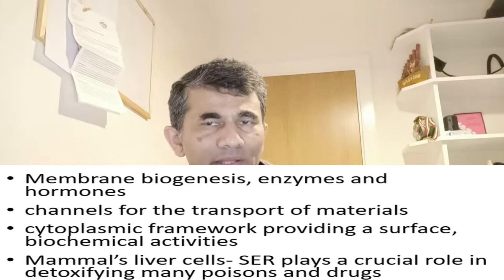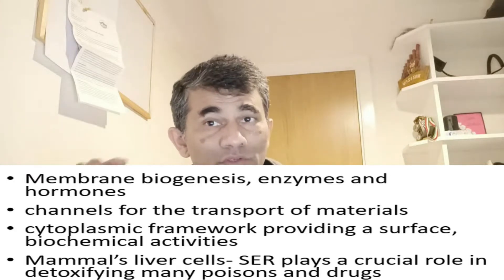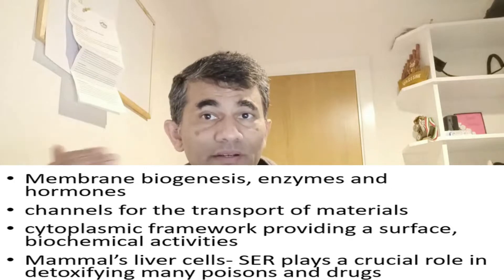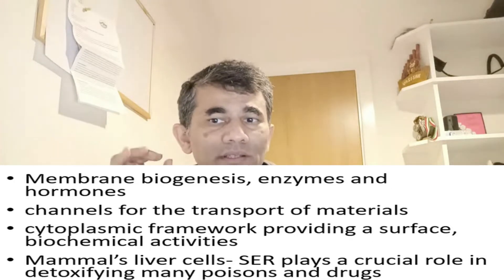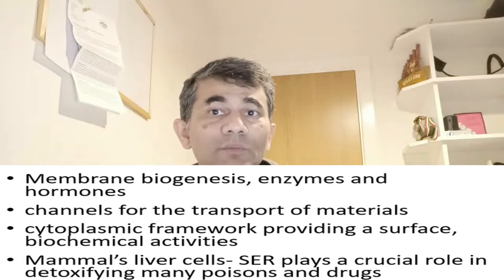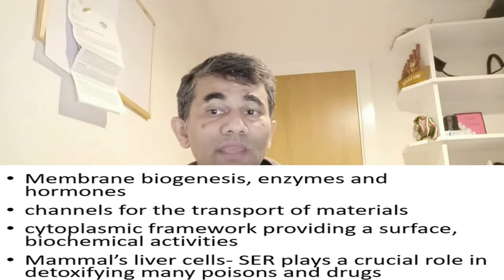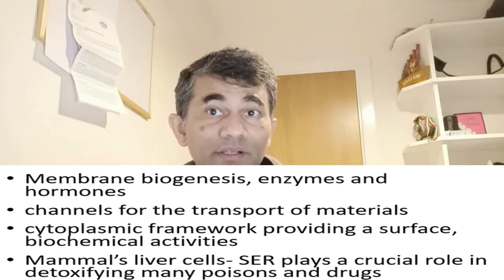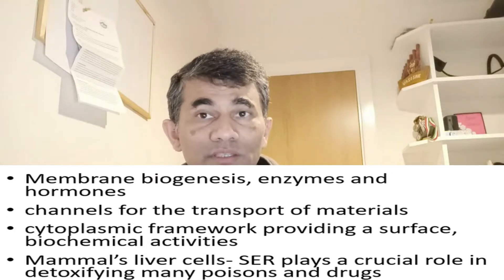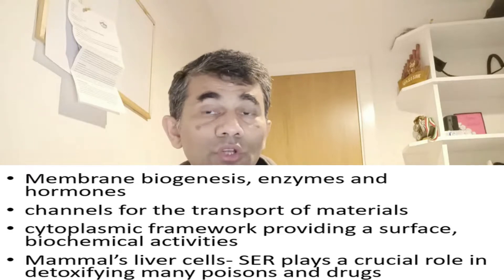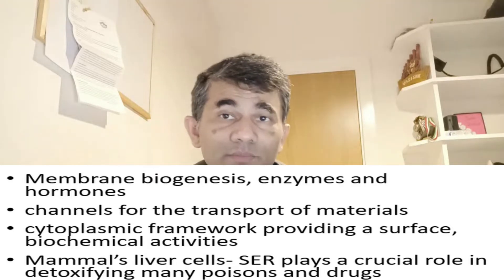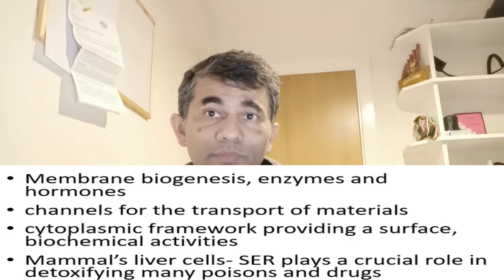Certain mammalian vertebrate liver cells have smooth endoplasmic reticulum that performs specific functions through chemical reactions on its surfaces. For example, the endoplasmic reticulum in liver cells — called hepatocytes — performs a chemical reaction that detoxifies many poisons and drugs. Detoxification means breaking down complex or poisonous substances into simple, non-poisonous molecules. This is a very important function of the liver, carried out by the endoplasmic reticulum of hepatocyte cells.